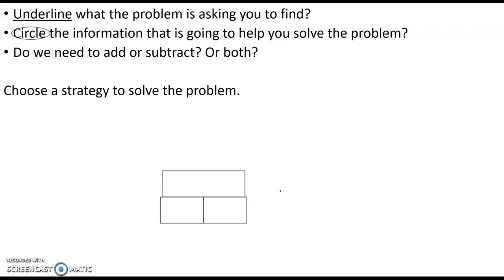There's a few things that we want to look at when we're solving word problems. First, we want to underline what the problem is asking us to find. Next, we want to circle the information that's going to help us solve the problem. Then we need to figure out if we need to add or subtract or do both. Then we'll choose a strategy to solve the problem.